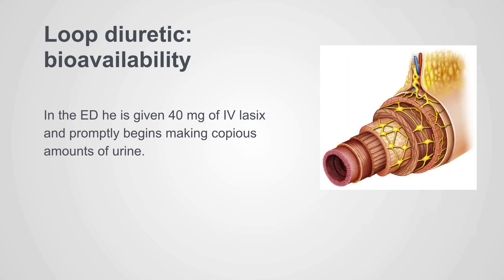How may that occur? It can occur because the edema we see throughout the body also occurs in the intestinal tract. As you get increased intestinal edema, that can decrease the absorption of furosemide so that what was an appropriate dose at one point is no longer appropriate for giving him the diuresis he needs.